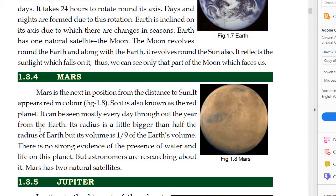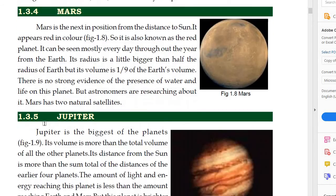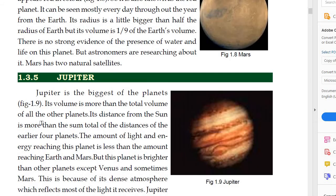Mars has two natural satellites. Jupiter is the biggest of the planets and its volume is more than the total volume of all other planets. Its distance from the sun is more than the sum total of the distance of the earlier four planets. The amount of light and energy reaching Jupiter is less than the amount reaching Earth and Mars.